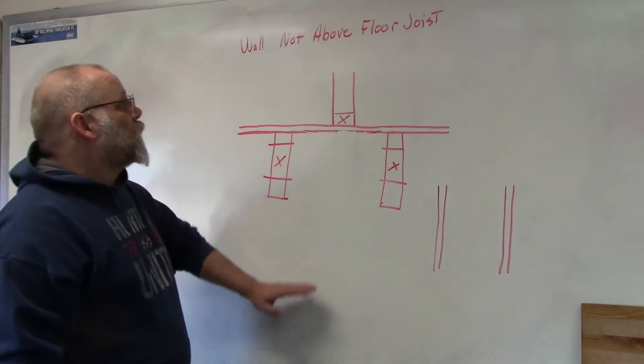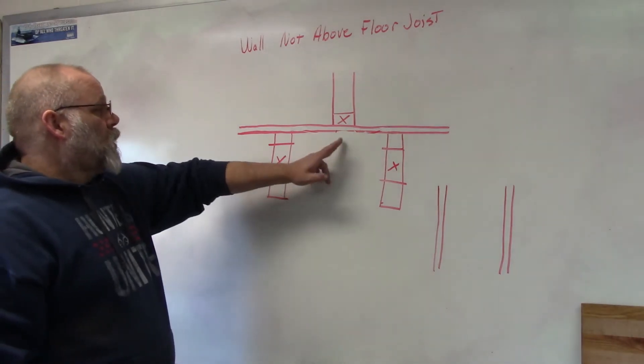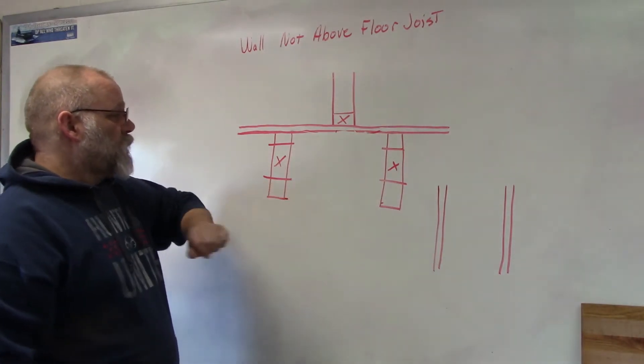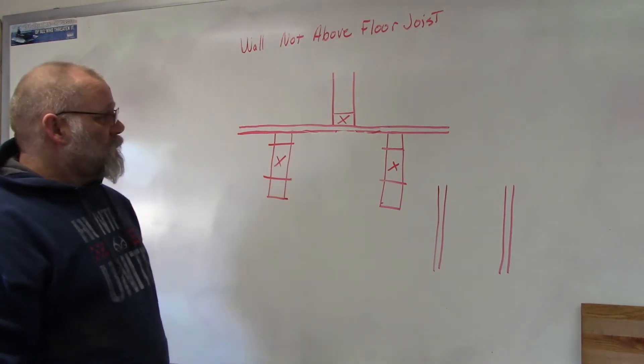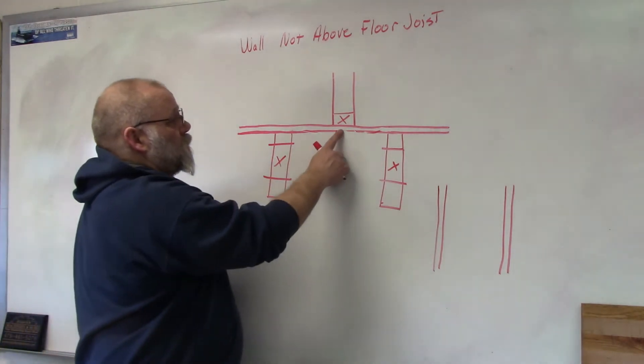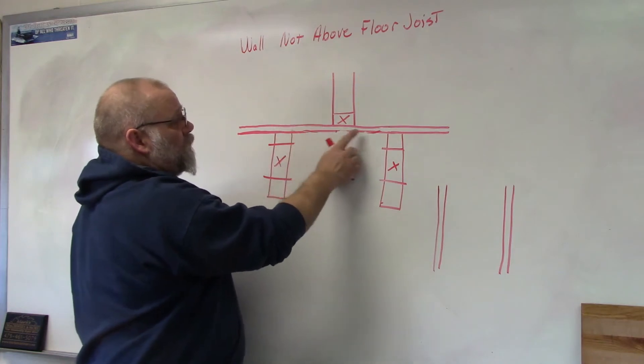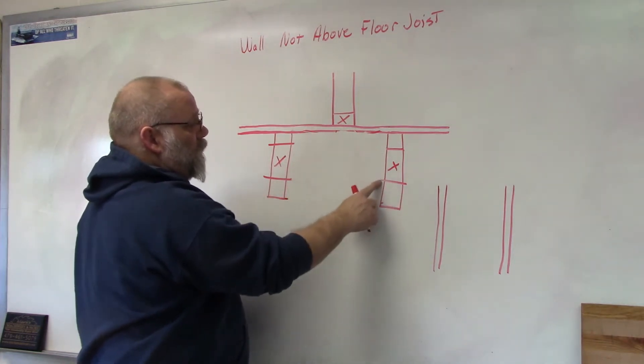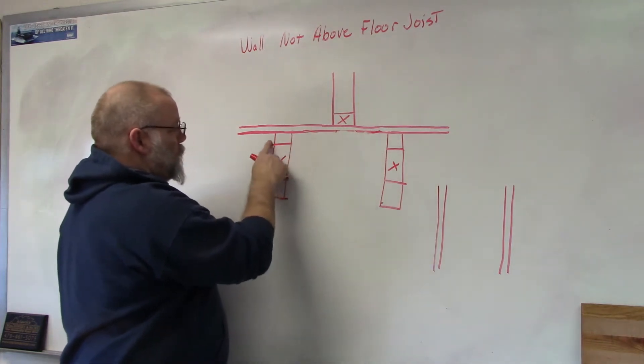Let's talk about putting a wall that's not supported by a floor joist. Once in a while this is going to happen where you have a wall that's going to sit above on the floor that doesn't rest on a floor joist.